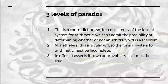So we have a contradiction. For consistency of the formal system of arithmetic, we can't admit the possibility of determining whether or not an arbitrary well-formed formula is a theorem. Nonetheless, it is a well-formed formula. It's a valid well-formed formula. So the system of arithmetic must be incomplete, because there are syntactically valid well-formed formulas which you can't prove. In effect, it asserts its own unprovability, so it must be true. So we have true things which are unprovable.